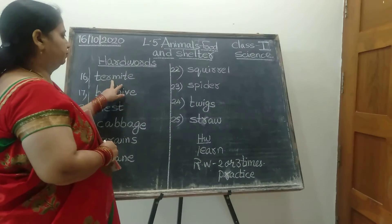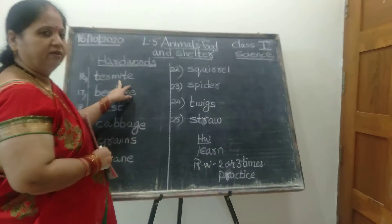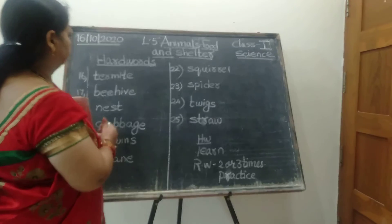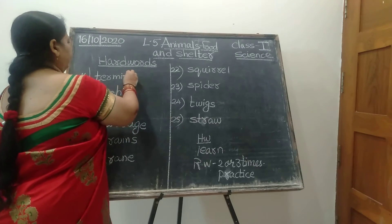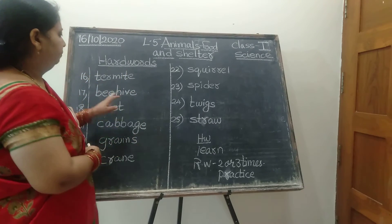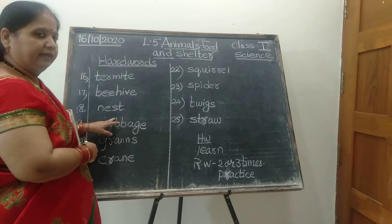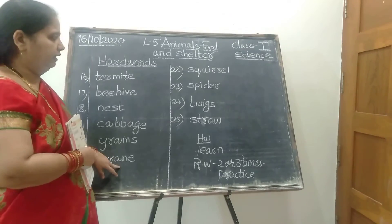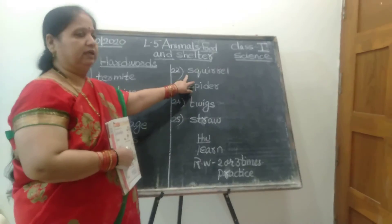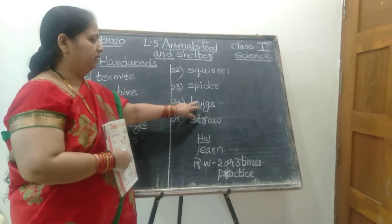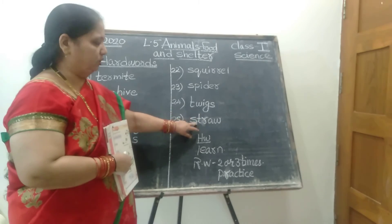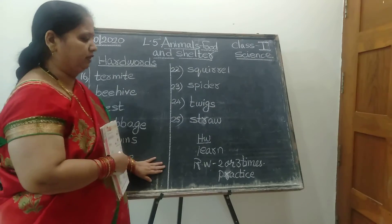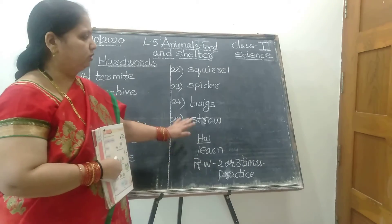Come on, say the word now — without spelling. You have to learn very fast and neatly. Termite. Pronounce properly — termite. Beehive. Nest. Cabbage. Grains. Crane. Squirrel. Spider. Twigs. Straw. Is it clear? Just do this practice at home — learning practice.